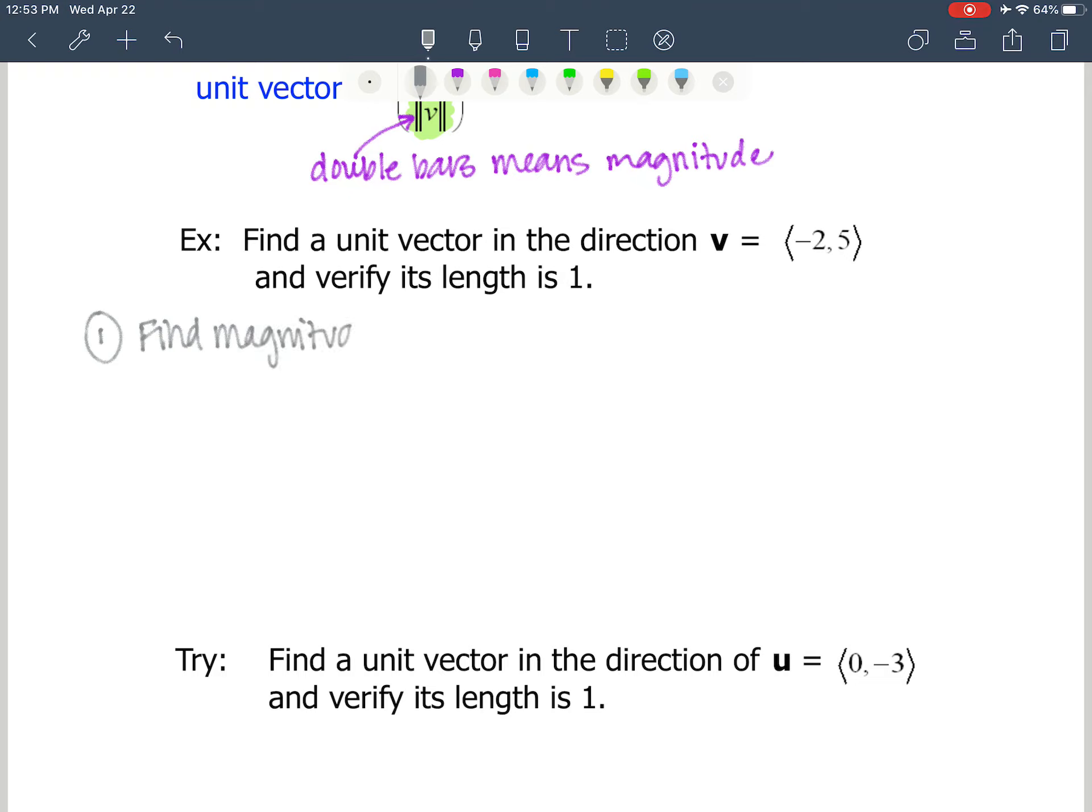Find the magnitude of vector V. I'm going to try and make it bold, lowercase, just like it is there. So the magnitude of V is equal to the square root of negative 2 squared, which is 4, plus 5 squared, which is 25, which is the square root of 29.